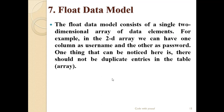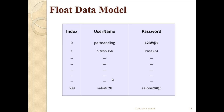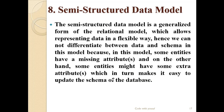The seventh one is the flat data model. The flat data model consists of a single two-dimensional array of data elements. For example, in the two-dimensional array we can have one column as username and another as password. There should be no duplicate values in this model. Here we have username and password as the columns with no duplicate values.